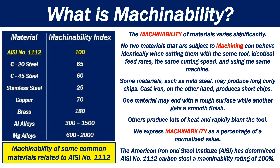The machinability of materials varies significantly. No two materials subject to machining behave identically when cut with the same tool, identical feed rates, the same cutting speed, and using the same machine. Some materials such as mild steel may produce long curly chips, while cast iron produces short chips. One material may end with a rough surface while another gets a smooth finish. Others produce a lot of heat and rapidly blunt the tool.